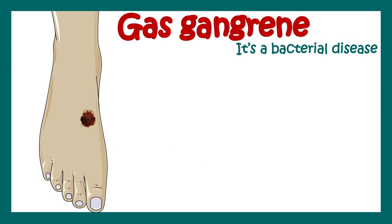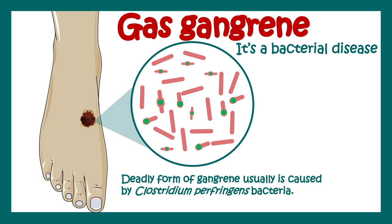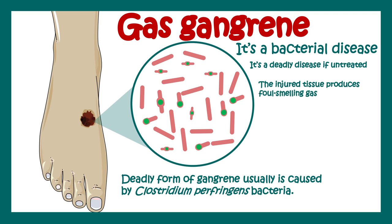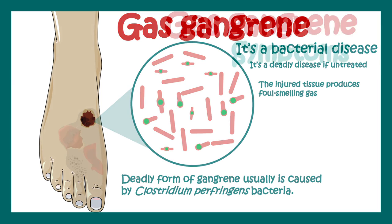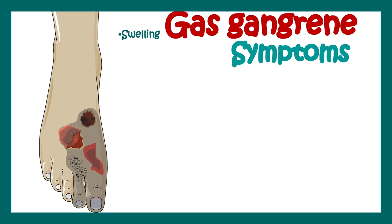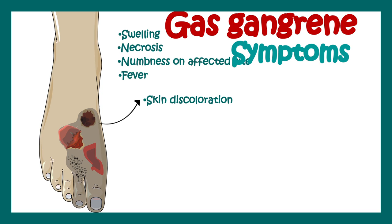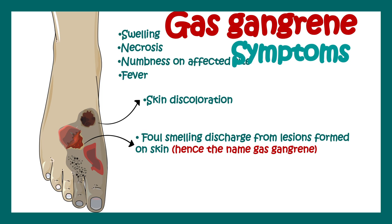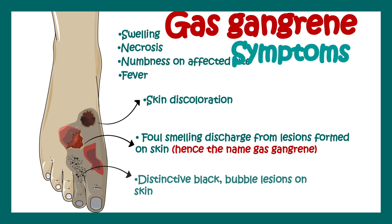Gas gangrene is a bacterial disease caused by Clostridium perfringens and it's a deadly disease if untreated. The injured tissue produces foul-smelling gas, and that's why the name is gas gangrene. The symptoms include swelling, necrosis of the local region, numbness on the affected region, fever, skin discoloration, foul-smelling discharge from lesions, and ultimately distinctive black bubble lesions on the skin around the affected area.